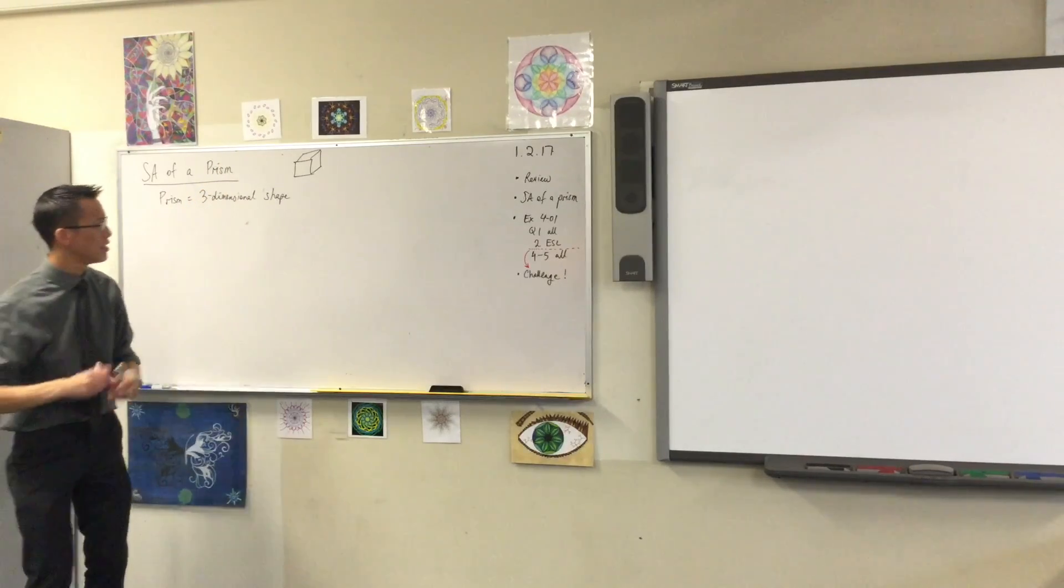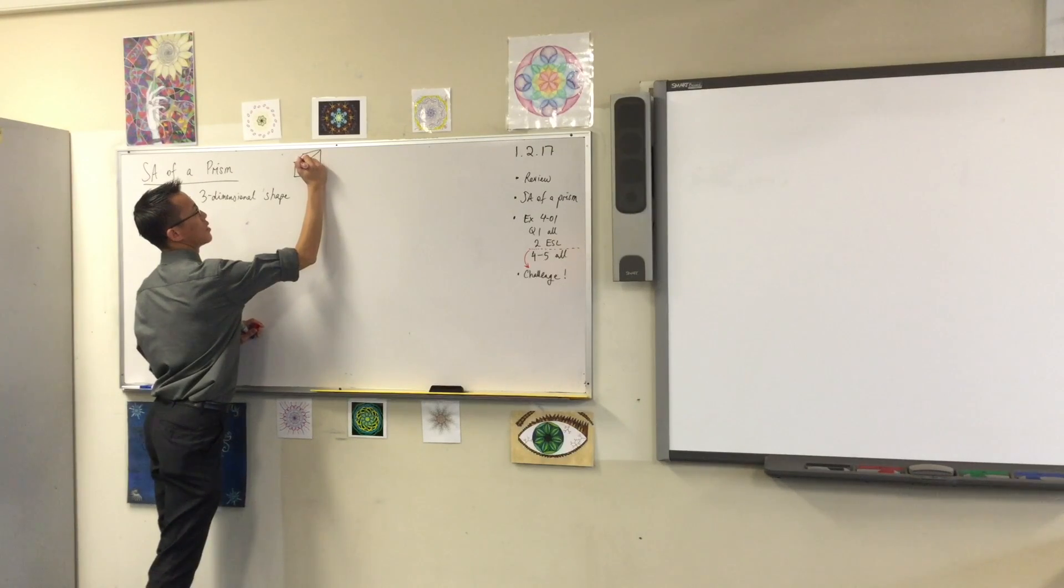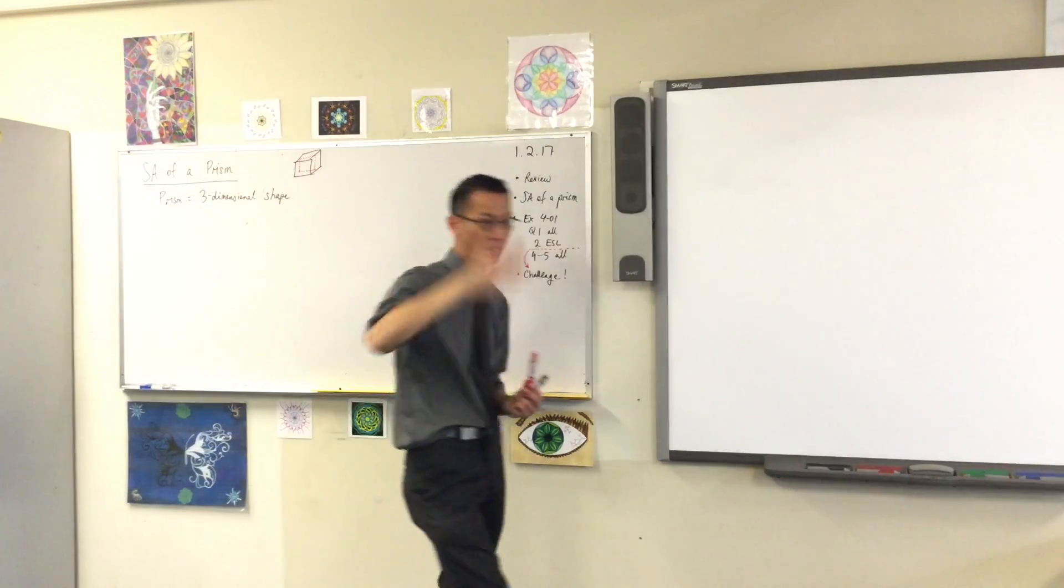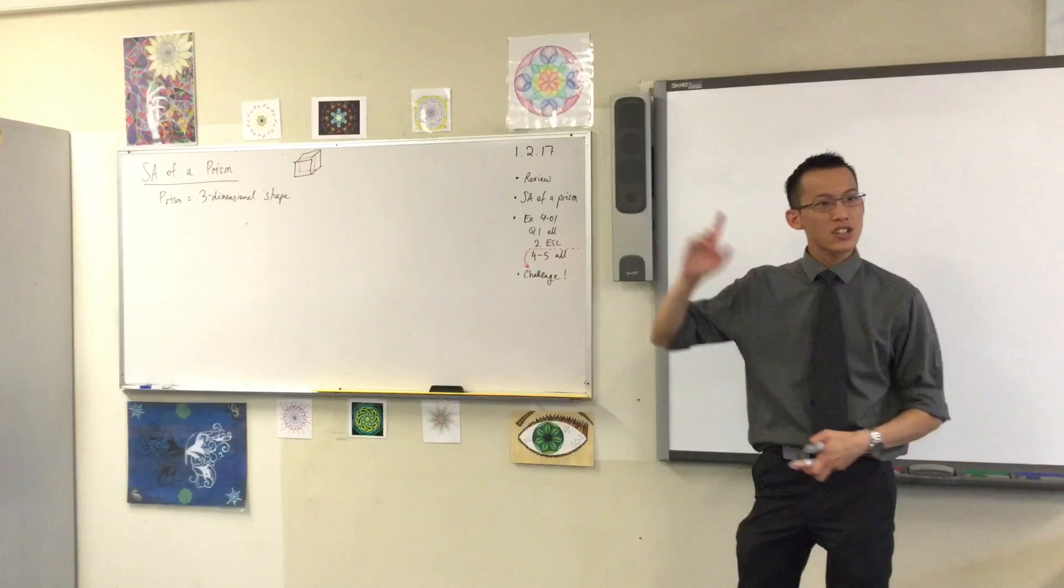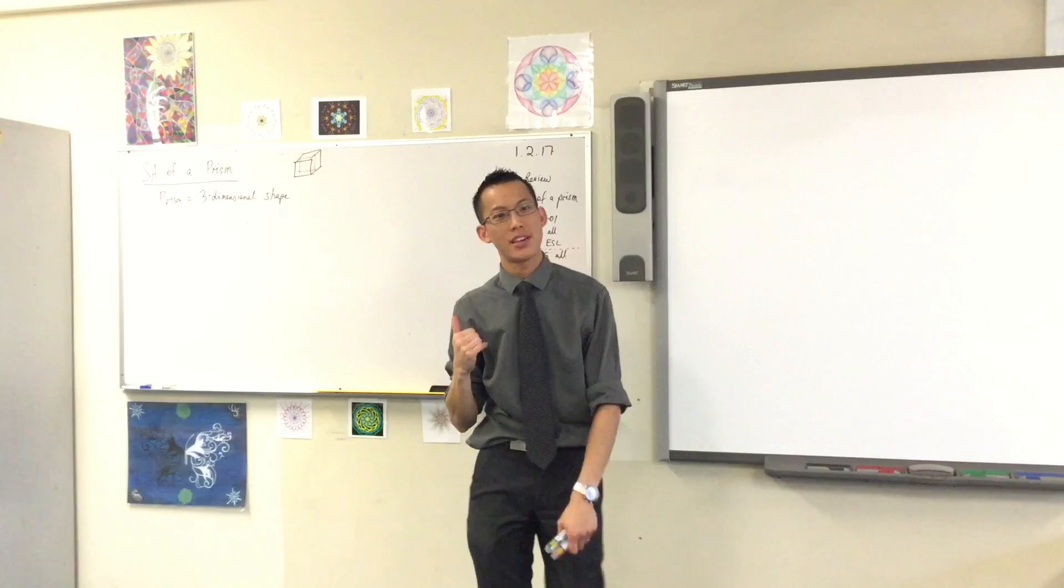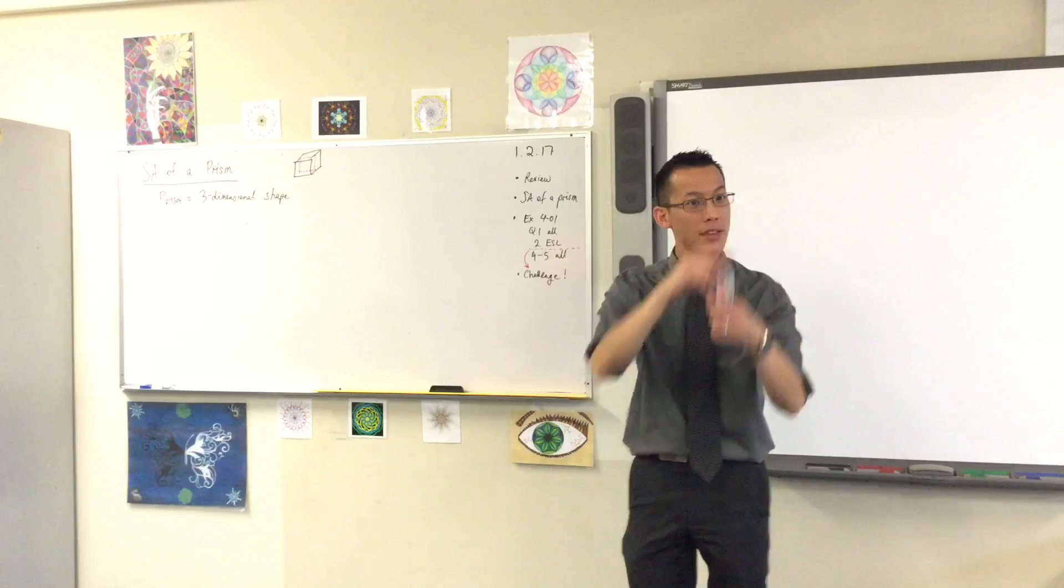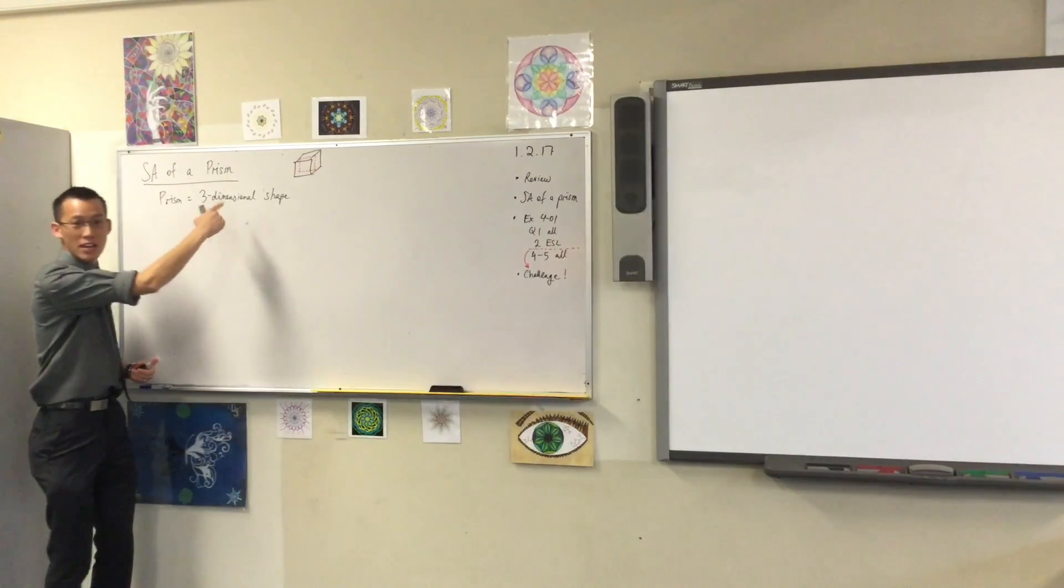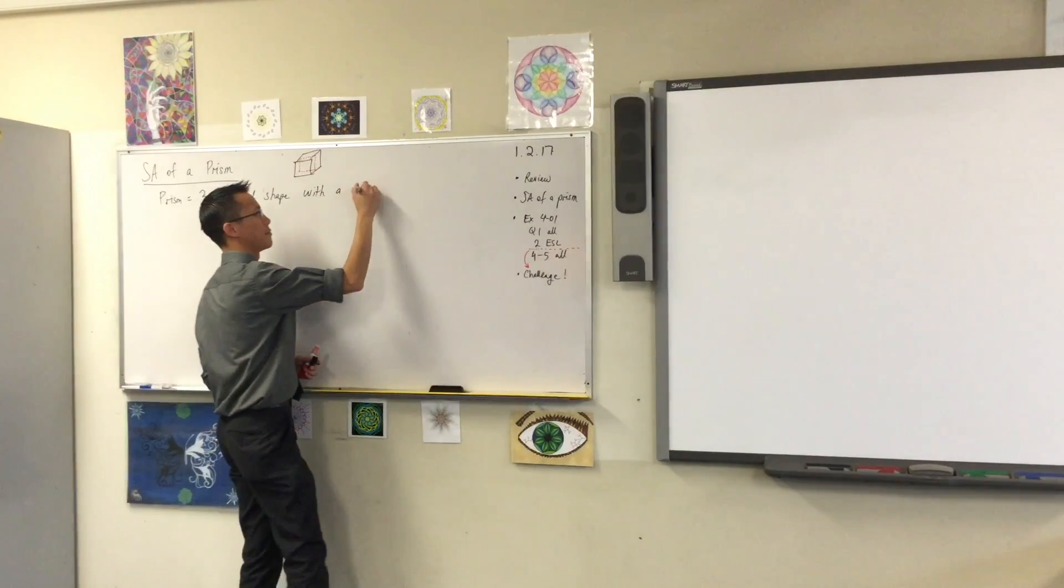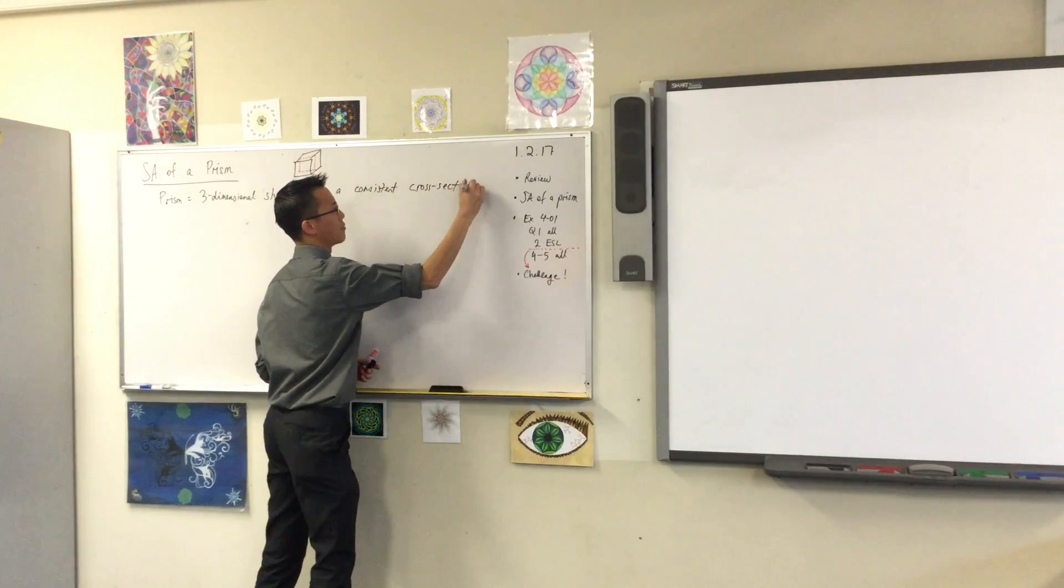Let's draw a cross-section of this cube. Now you can draw lots and lots of different ones. Just for the sake of consistency, let's all draw the same one. Something like this. Okay, that's right there in the middle, as if I cut the thing in half. So that cross-section, the special thing about a cube is that we just drew one of the cross-sections, but any of the other cross-sections that I drew, they would be the same.